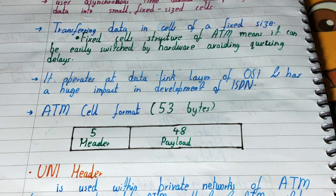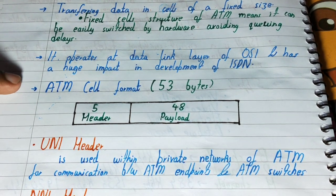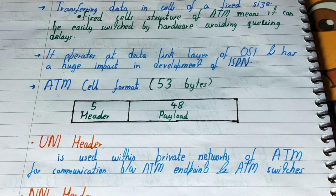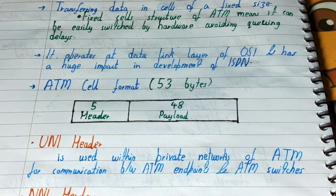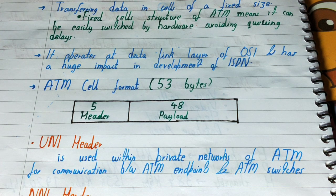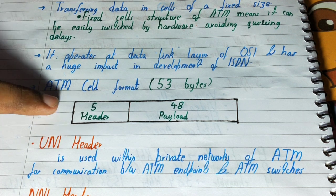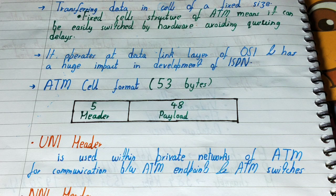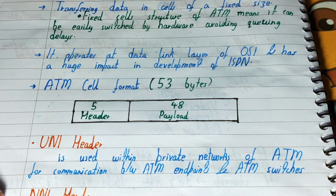The ATM cell format is 53 bytes. No matter how large your data is, it will be divided into this fixed cell size format for transmission. Of those 53 bytes, 5 bytes are for the header and 48 bytes are for the payload — that is, your actual data. The header stores information such as the source address, destination address, and other details related to that particular packet.